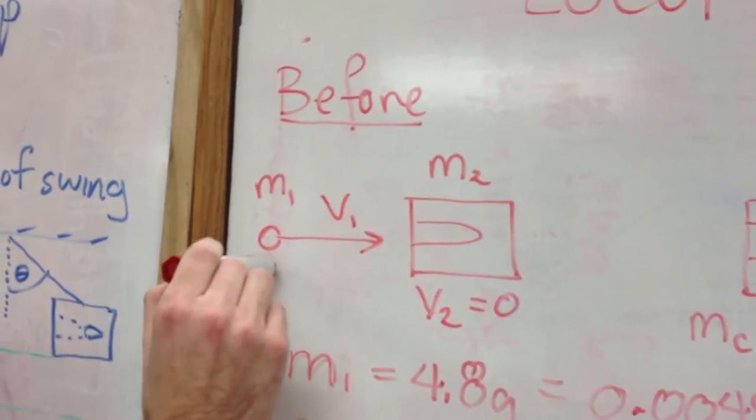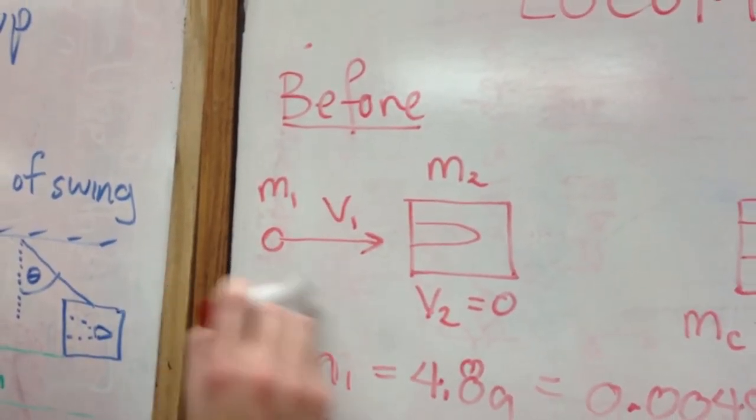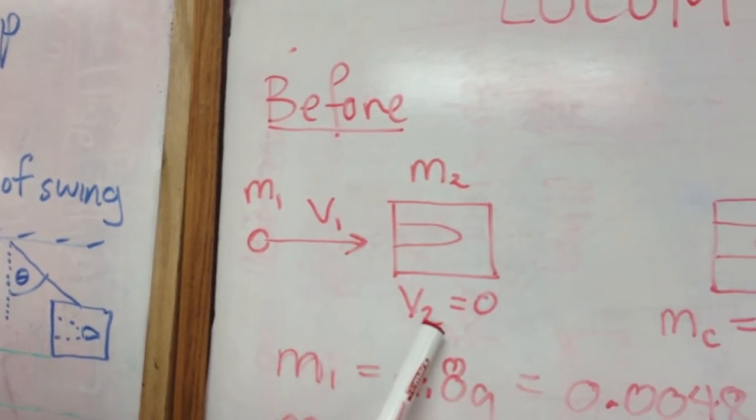You have your mass, which is shooting out with a certain velocity, and you have the box, which is sitting at a velocity of 0. After collision, the two masses combine and they fly forward with a combined velocity.